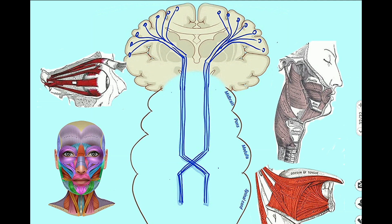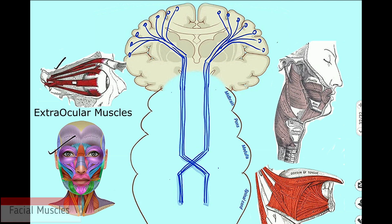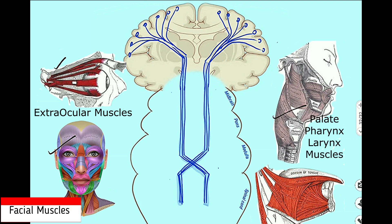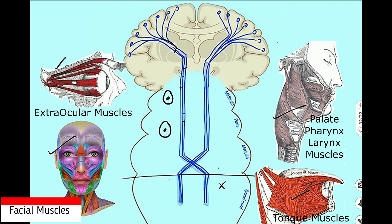Now I will talk about a very special part of the pyramidal tract that supplies the muscles of the cranium — muscles of the orbit, muscles of facial expression, muscles of the pharynx and larynx, and muscles of the tongue. For these muscles, the upper motor neurons are present in the same pyramidal tract, but the lower motor neuron is present in the brainstem as nuclei. So these upper motor neurons will not cross the brainstem or enter the spinal cord — they have their lower motor neurons in the brainstem. Therefore, we cannot call these corticospinal fibers.